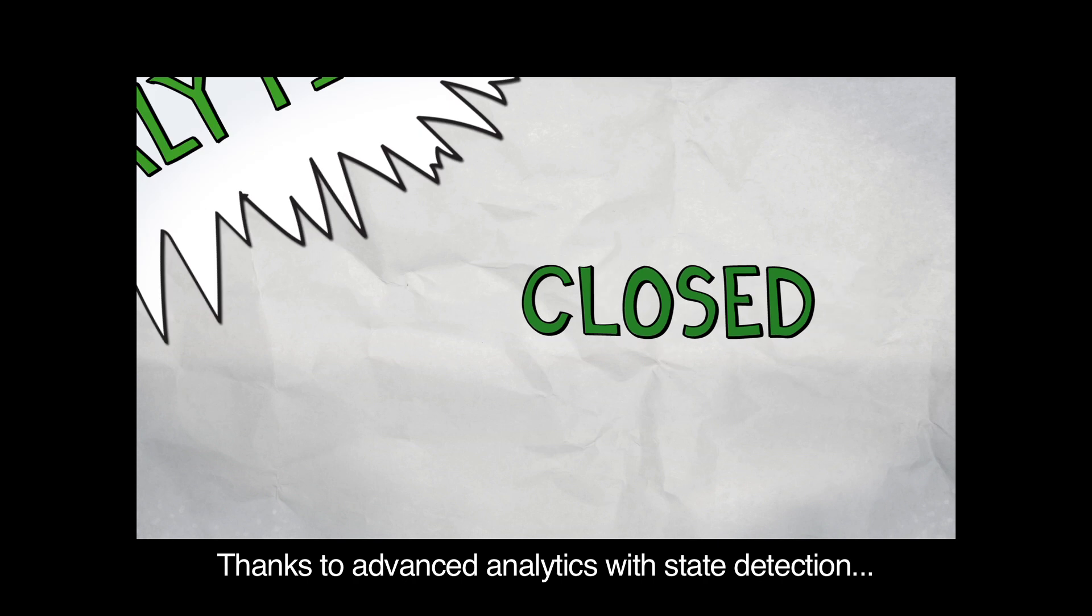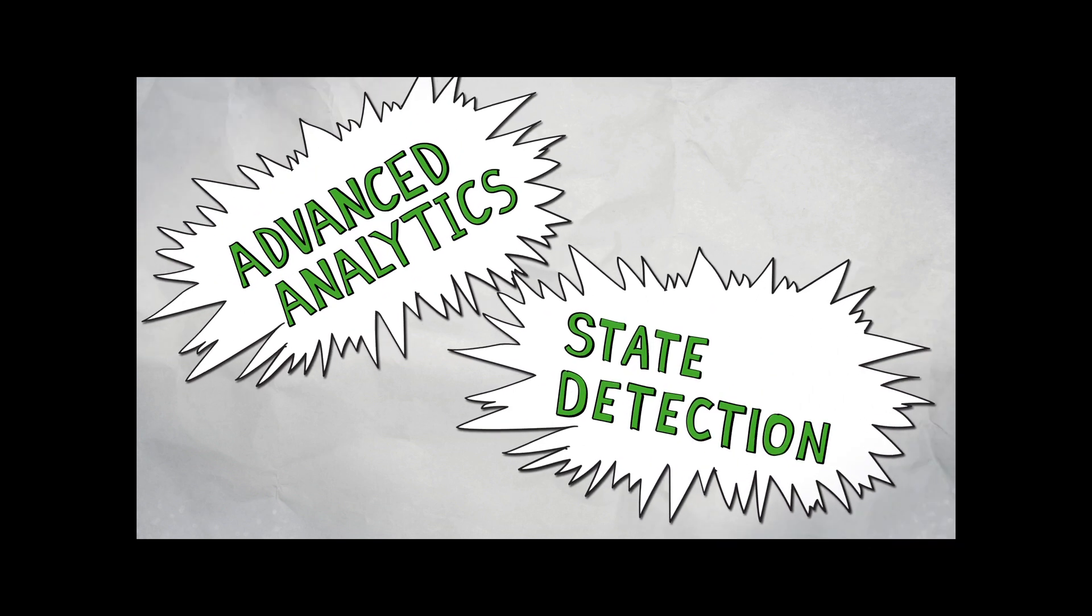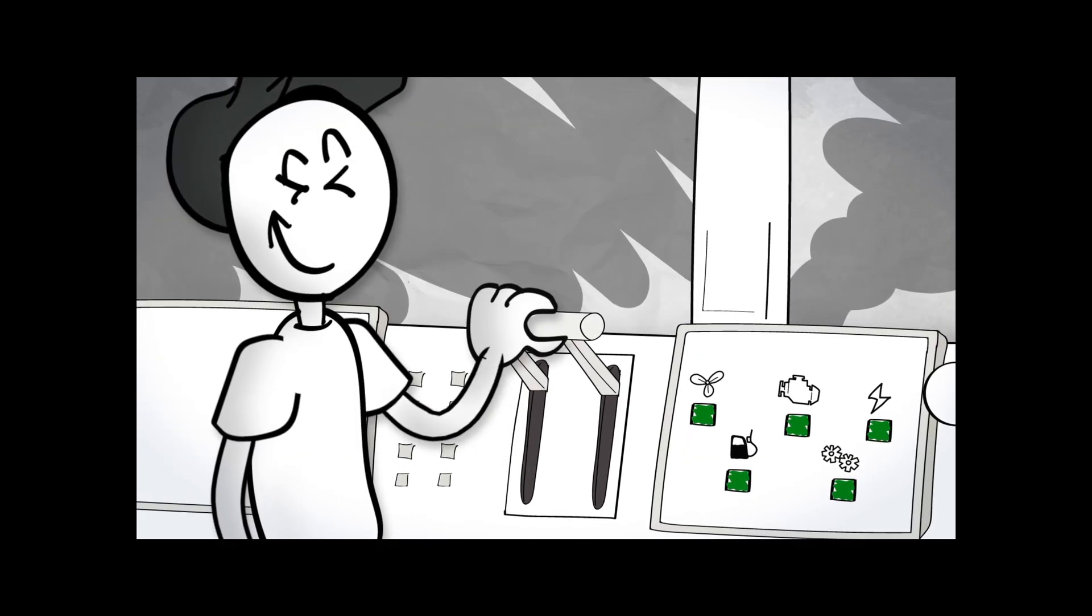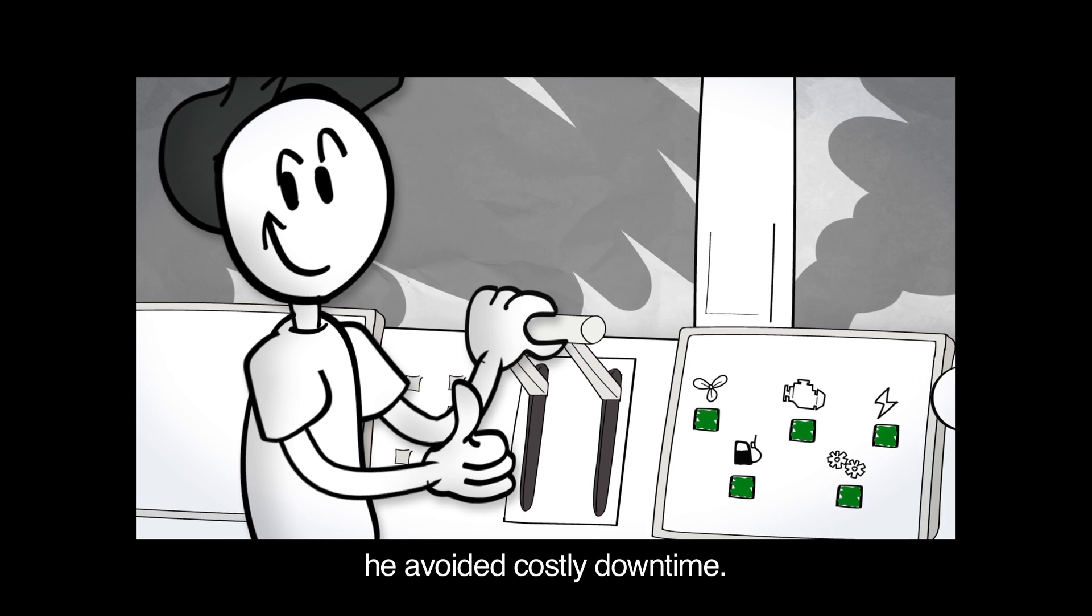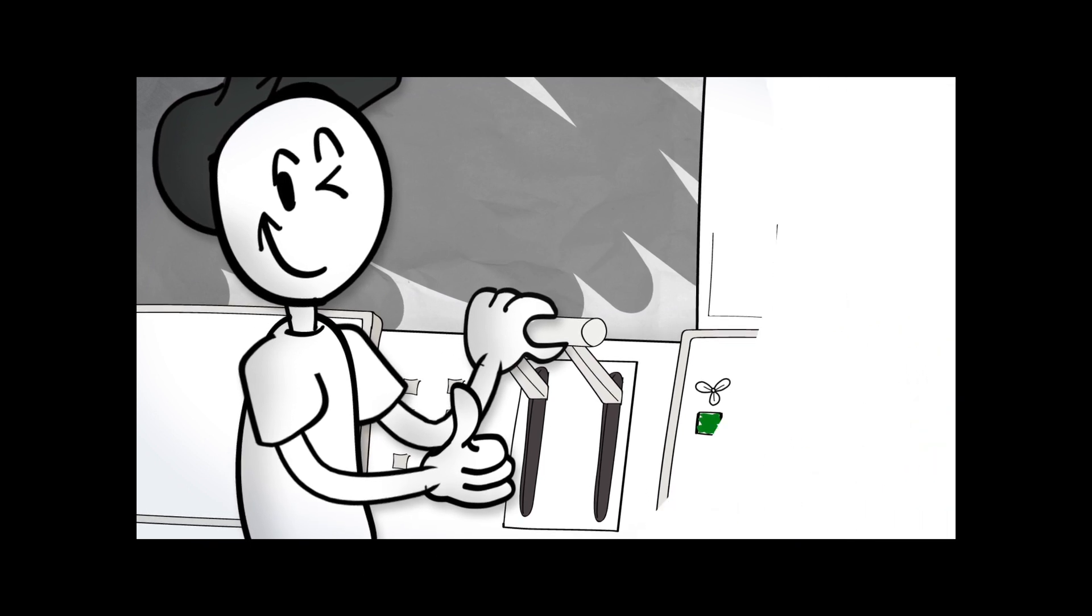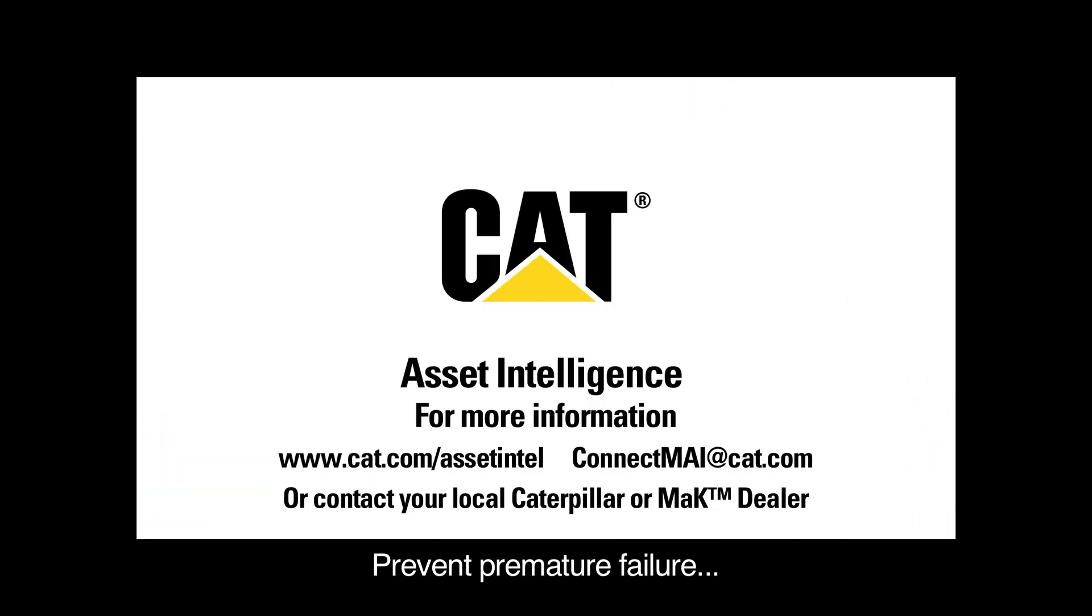Thanks to advanced analytics with State Detection, Bob is back on schedule. And with a planned repair, he avoided costly downtime. Prevent premature failure and avoid unexpected downtime. Get CAT Asset Intelligence.